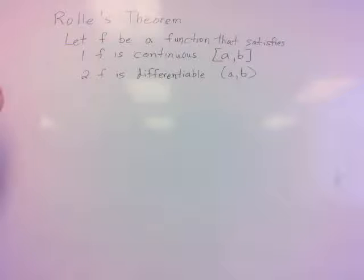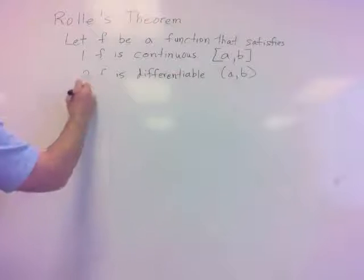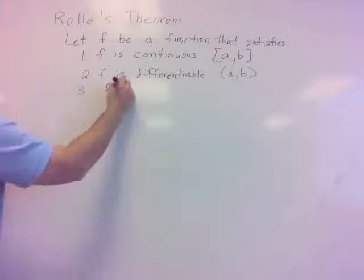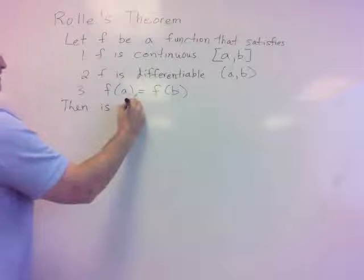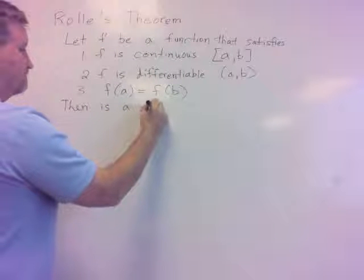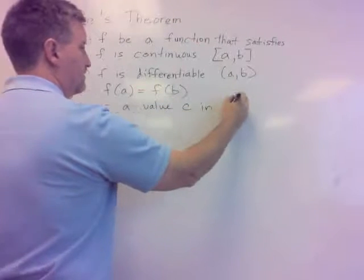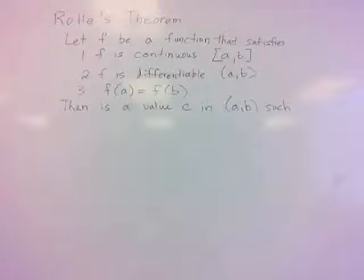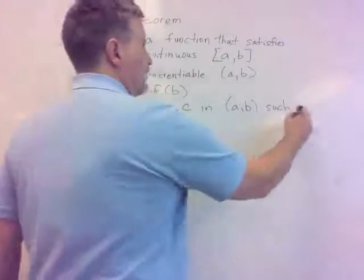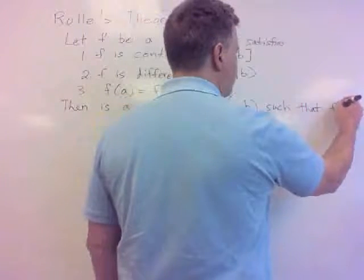So F is continuous from A to B, F is differentiable on A to B, basically. And then number three, we've got a very specific criteria, and that is F of A equals F of B. So that's the premises, if you will, of this Theorem. The conclusion of this Theorem is this. Then there is a value C in the interval A to B such that F'